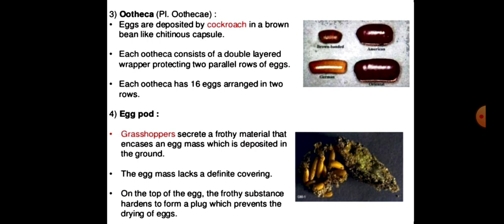The next type is the egg pod. Grasshoppers secrete a frothy material that encases an egg mass which is deposited in the ground. The egg mass has no definite covering. The frothy substance at the top hardens to form a plug, which protects the eggs from desiccation.